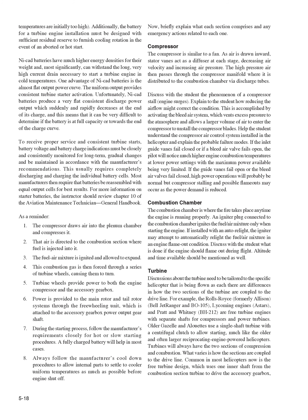Briefly explain what each section comprises and any emergency actions related to each. The compressor is similar to a fan. As air is drawn inward, stator vanes act as a diffuser at each stage, decreasing air velocity and increasing air pressure. The high-pressure air then passes through the compressor manifold where it is distributed to the combustion chamber via discharge tubes. Discuss with the student the phenomenon of a compressor stall and engine surges, and explain how reducing the airflow might correct the condition by activating the bleed air system, which vents excess pressure to the atmosphere. If the inlet guide vanes fail closed or a bleed air valve fails open, the pilot will notice much higher engine combustion temperatures at lower power settings with maximum power being very limited. If the guide vanes fail open or the bleed air valves fail closed, high power operations will probably be normal but compressor stalling and possible flameouts may occur as power demand is reduced.